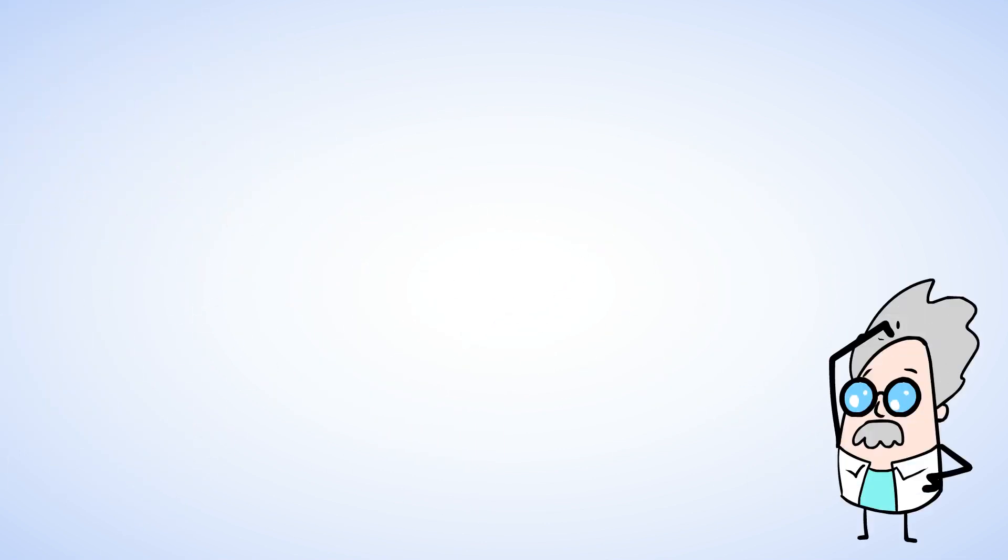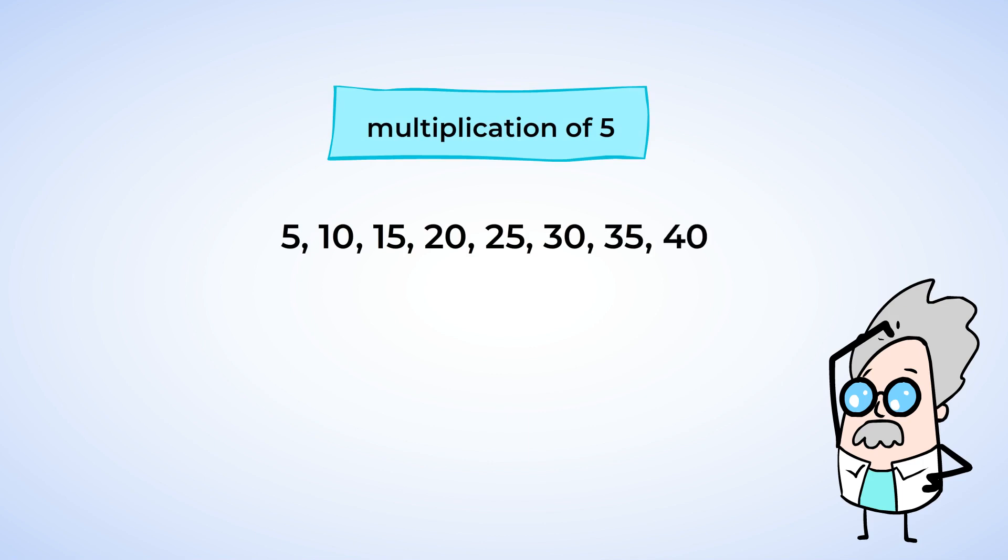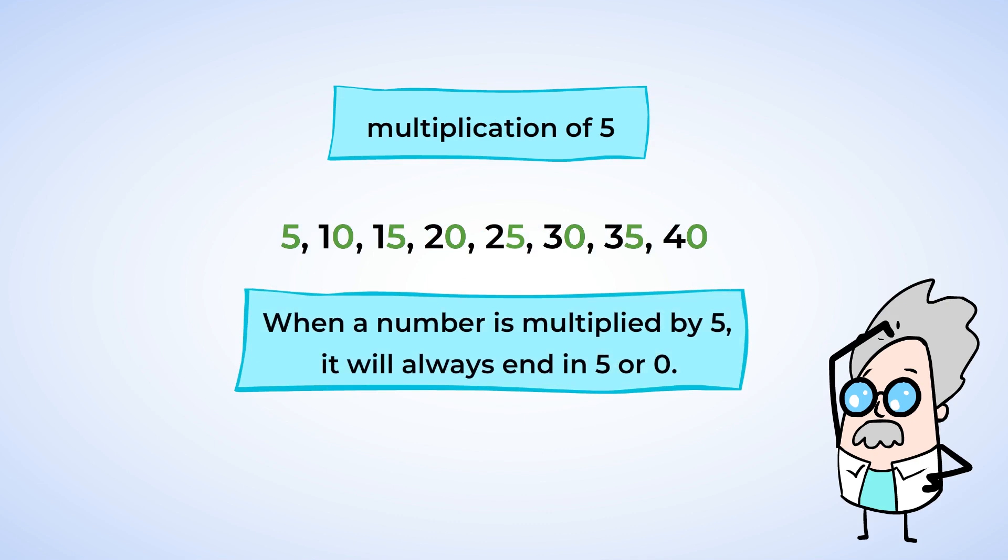And here's something mighty cool. The multiplication of 5s. Let's count by 5s. 5, 10, 15, 20, 25, 30, 35, 40. What do you notice about how these numbers end? Correct. All of the numbers end in 5 or 0. So when a number is multiplied by 5, it'll always end in 5 or 0. And this also means that if a number ends in 5 or 0, it can be divided evenly by 5.